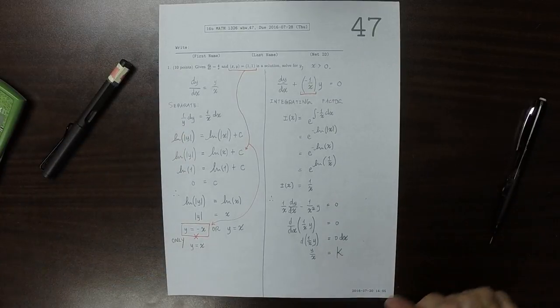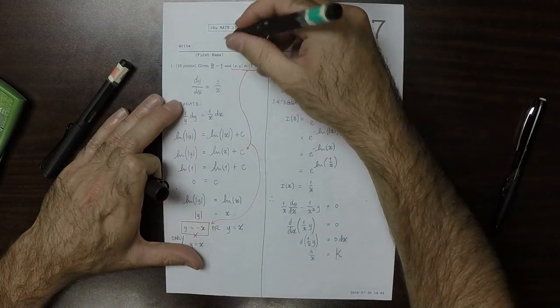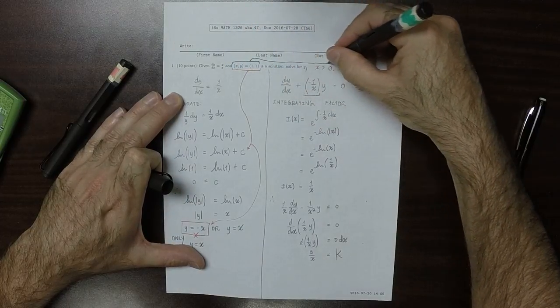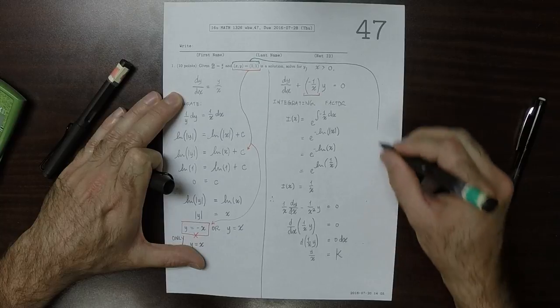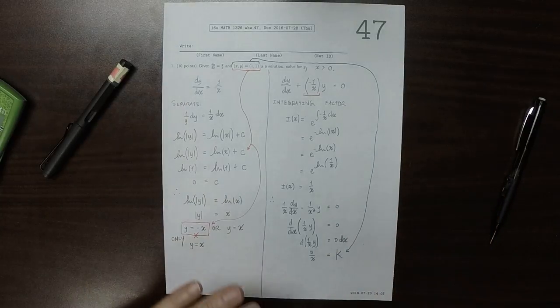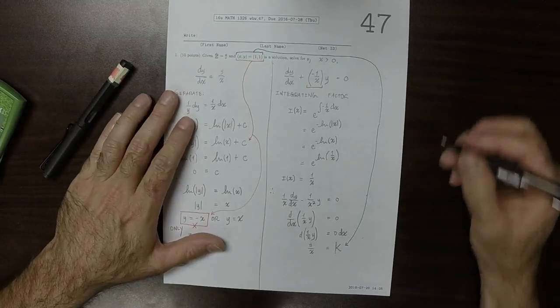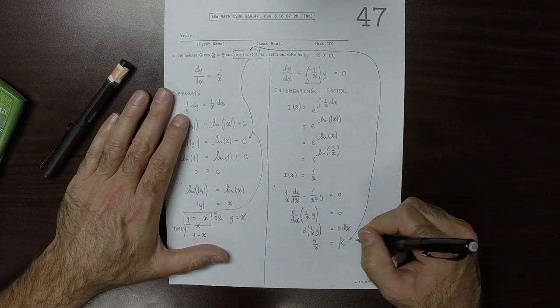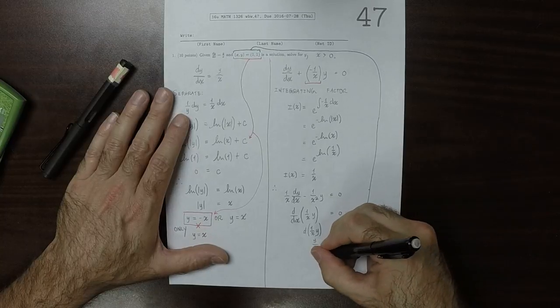Now we can use the initial data. Plug it in. So that's saying that when x and y are both 1, that should be a solution. So that tells us that 1 is k.